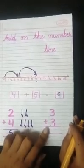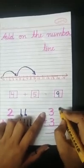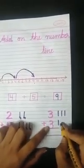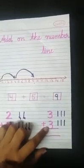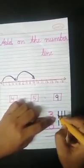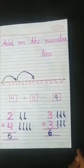We do this addition with the same method. The number is three, so we draw three lines, and then three more lines for the other three. Now we count all together: one, two, three, four, five, six. You can also cut the lines to count — one, two, three, four, five, six. We get the answer six.